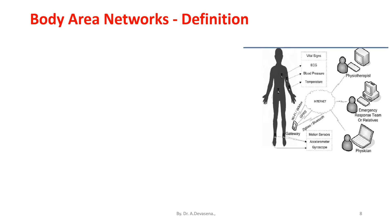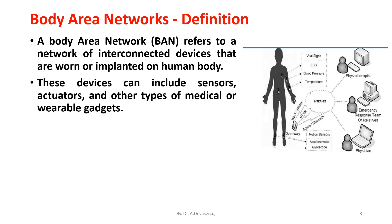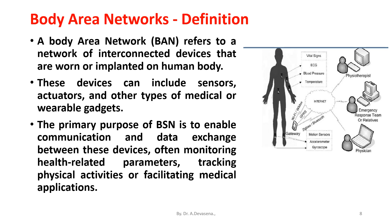Definition of body area network. A body area network refers to a network of interconnected devices that are worn or implanted on the human body. These devices can include sensors, actuators, and other types of medical or wearable gadgets. The primary purpose of body area network is to enable communication and data exchange between these devices, often monitoring health related parameters, tracking physical activities, or facilitating medical applications.